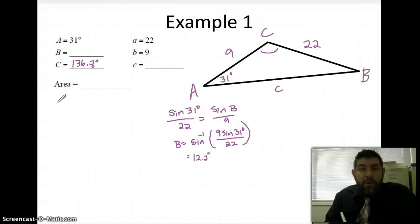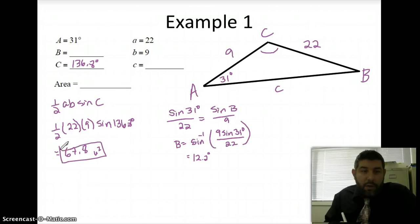All right. So now we're going to use the area formula, one-half AB sine of angle C. So we're going to have one-half. A is 22, B is 9, and angle C is 136.8. And we'll enter that in our calculator. And we will come up with about 67.8, okay, units squared, right? Square units. All right. And that's using this formula for defining the area of oblique triangles.